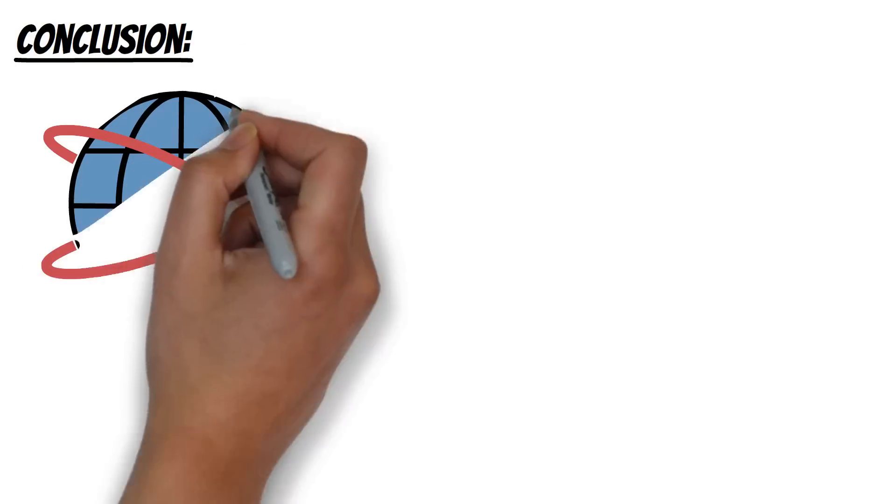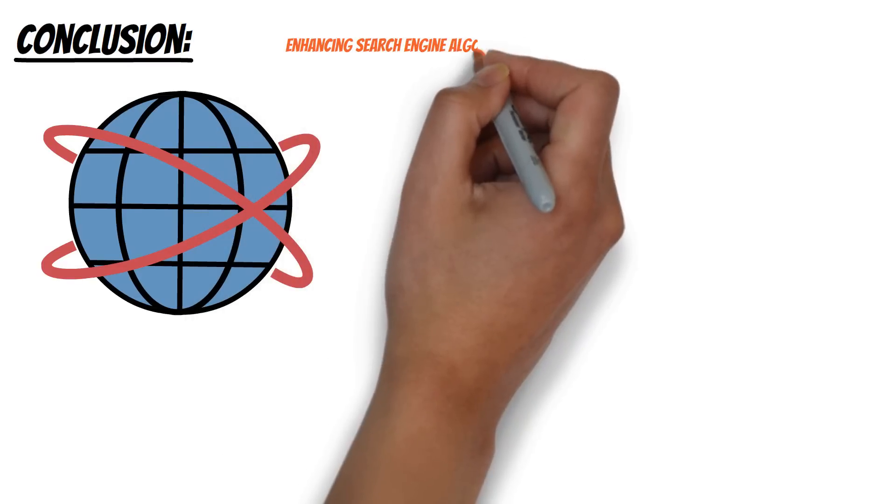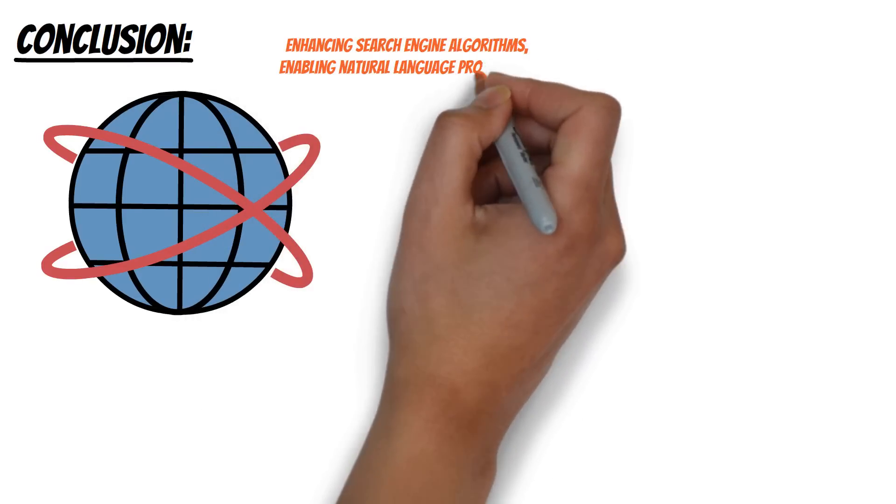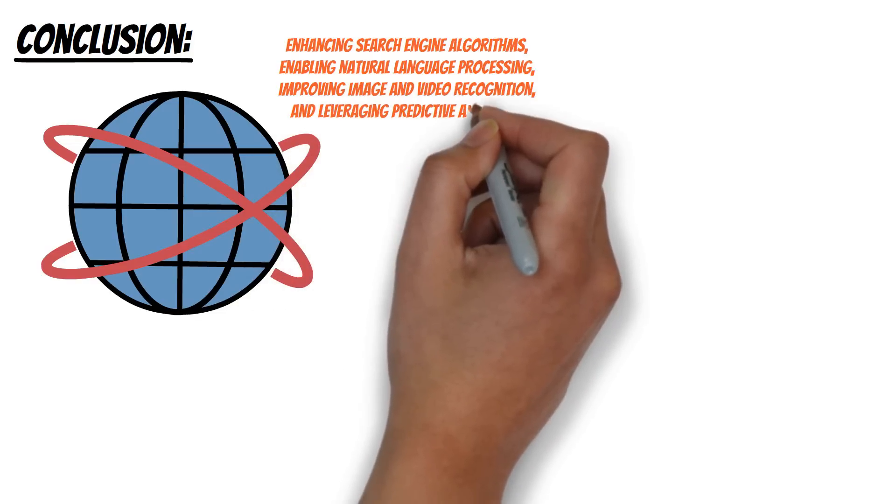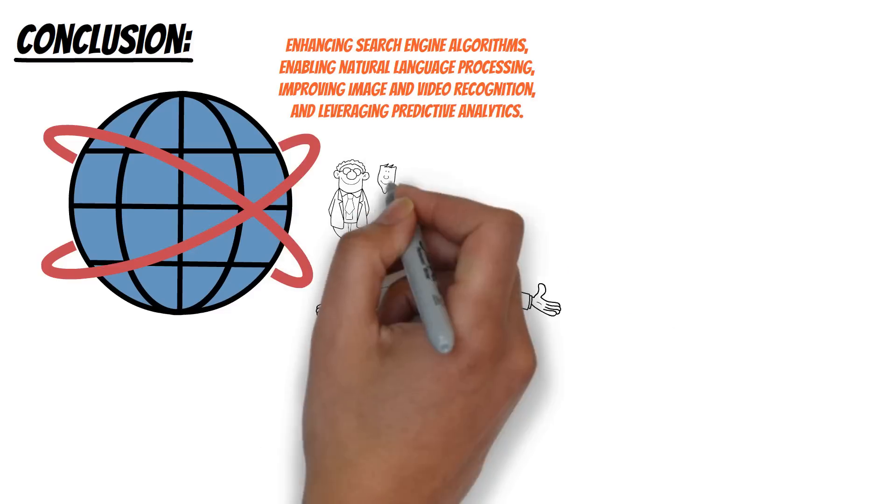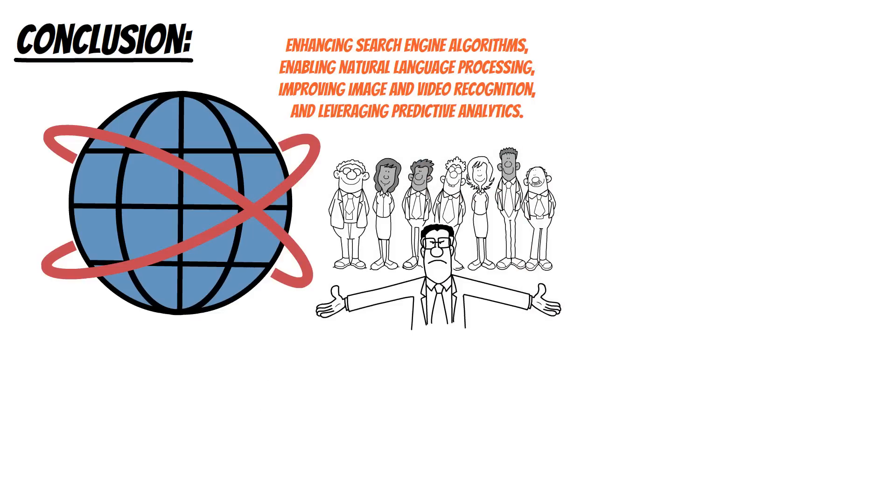Conclusion: Artificial intelligence has revolutionized search engine optimization by enhancing search engine algorithms, enabling natural language processing, improving image and video recognition, and leveraging predictive analytics. These advancements have made SEO more sophisticated and user-centric, allowing businesses to create content that aligns with user intent and preferences.